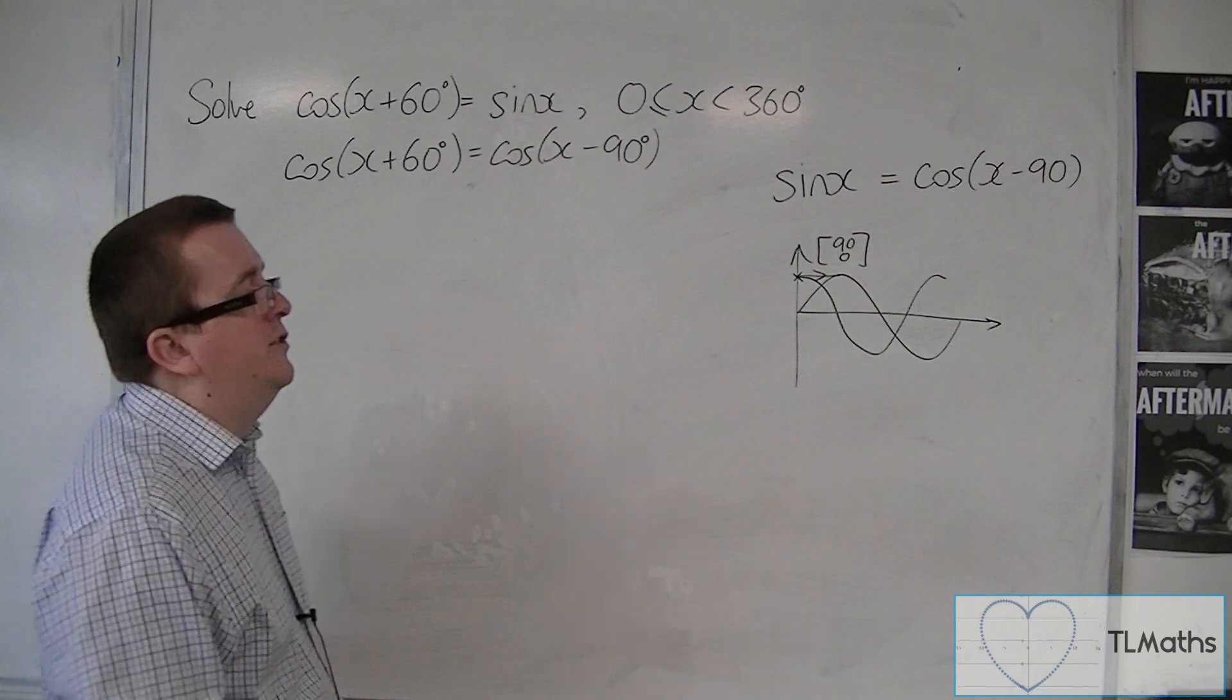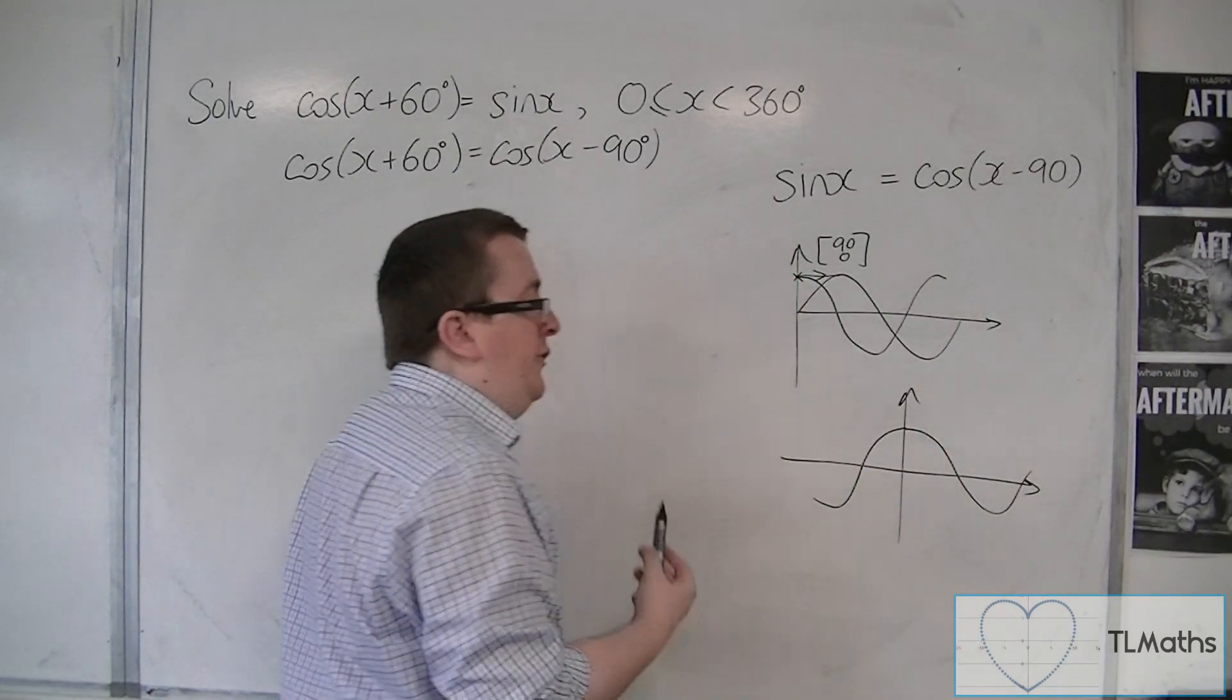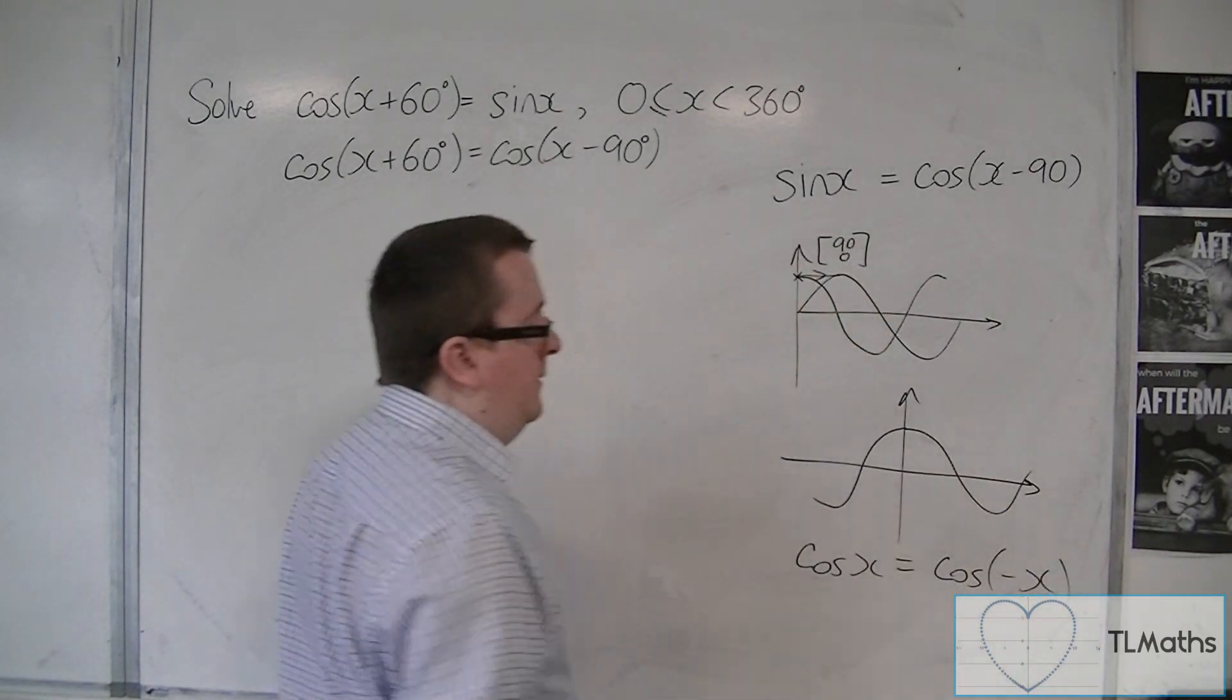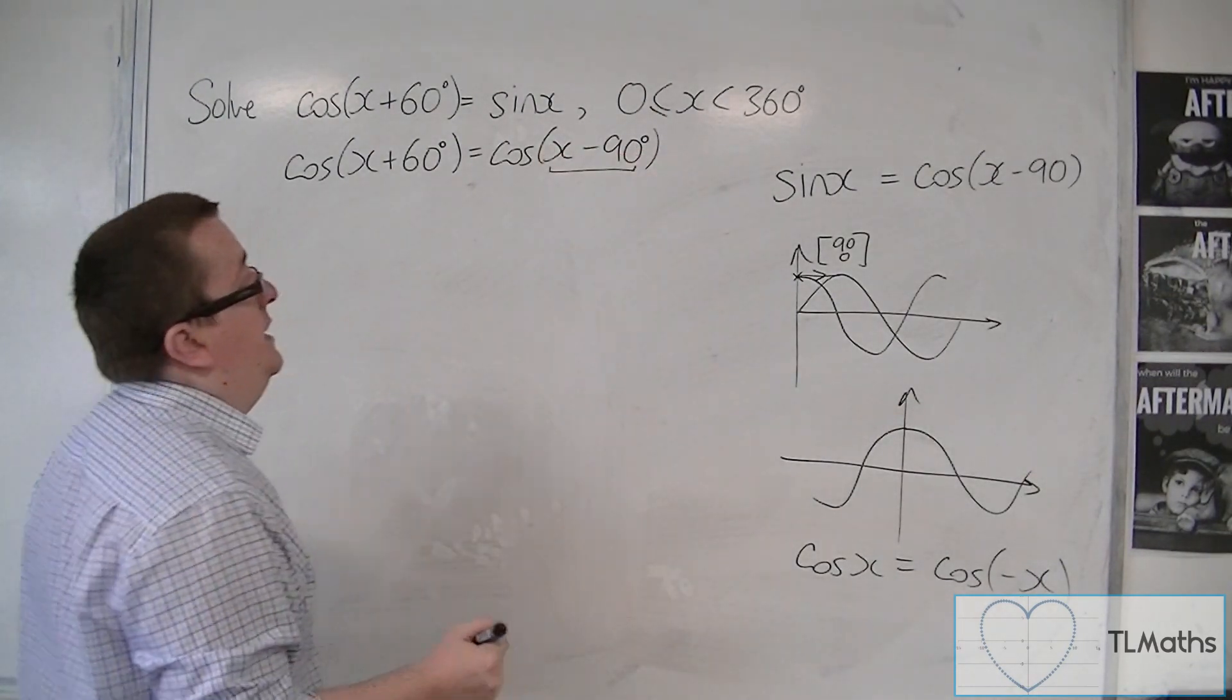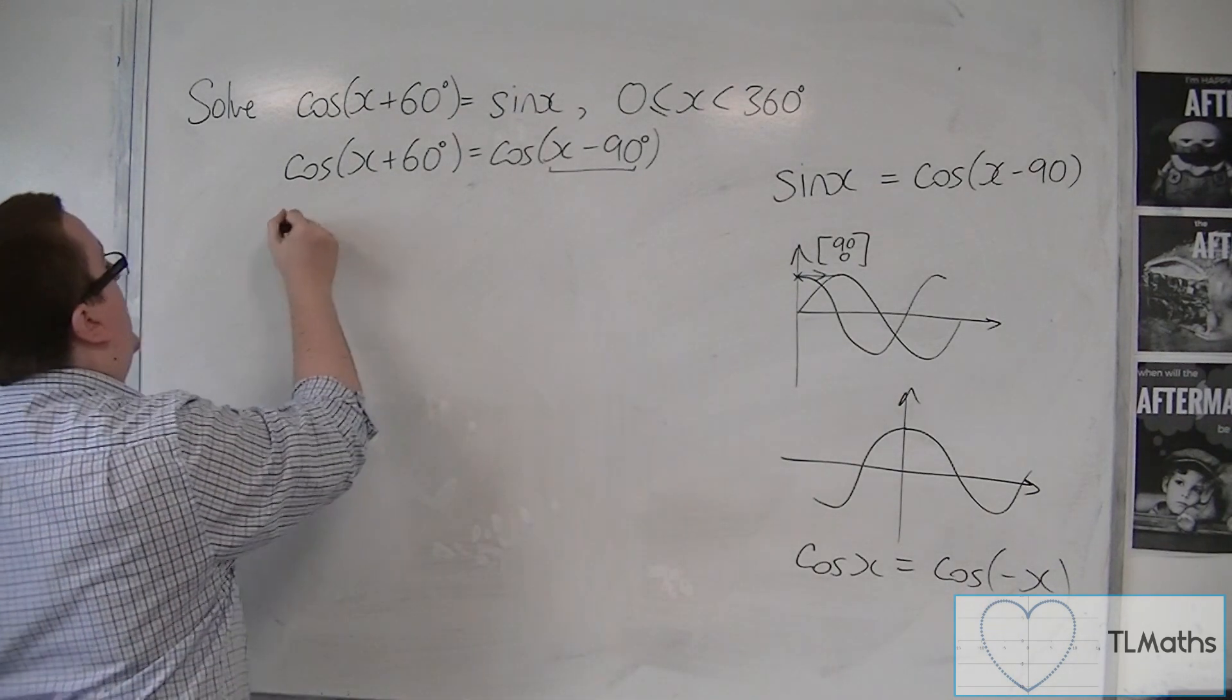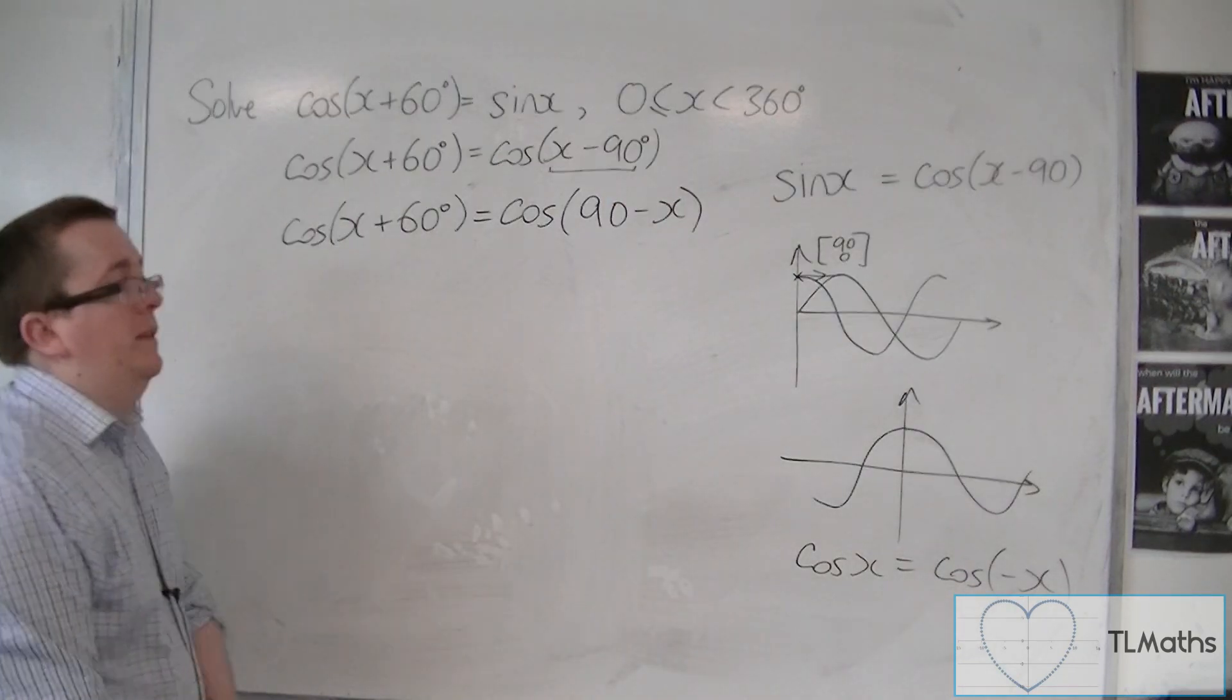This brings me back to another point from the previous video, where we looked at cosine and the fact that cosine is symmetric in the y-axis. So we came across that cos(x) is exactly the same as cos(-x). In other words, if I make this negative, then I haven't changed things whatsoever. That's what this is telling me. If I replace x with minus x, then nothing changes. So instead, I can write cos(x+60) is equal to cosine of minus x plus 90, or 90 minus x.